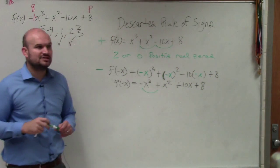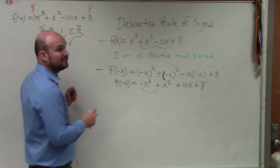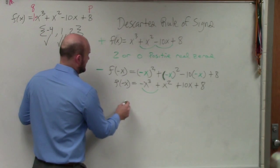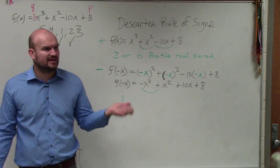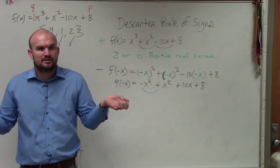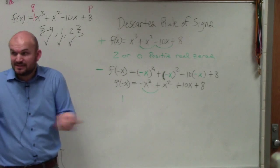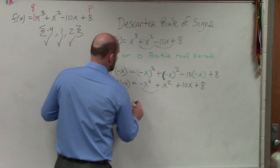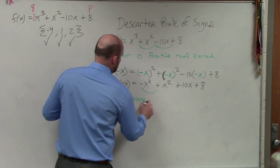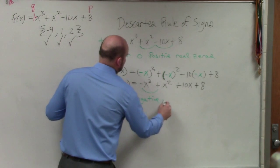So now let's count the number of sign changes. We have one sign change, right? So the answer for the number of negative ones, negative zeros, is one. Can we subtract an even number from one and still have like an actual positive number? No, so it's just one. You can't subtract an even number from one and still have a positive number. So it's just one negative real zeros.